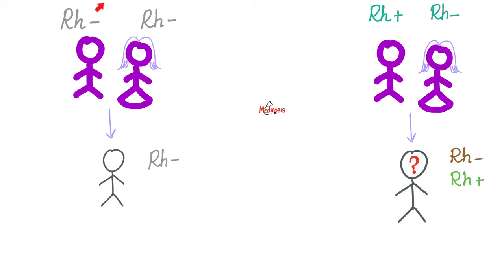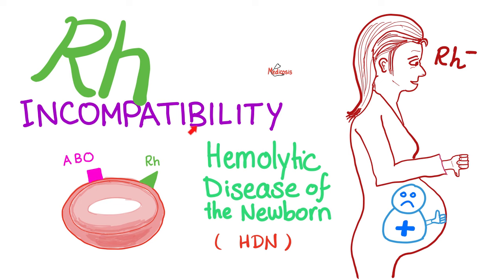If both mommy and daddy are RH negative, by definition the baby will have to be RH negative. But if daddy is RH positive and mommy is RH negative, then the baby could be either. There is a disease called RH incompatibility — it also causes hemolysis for the baby. This happens when mommy is RH negative but the baby is RH positive, so the baby has the D antigen.